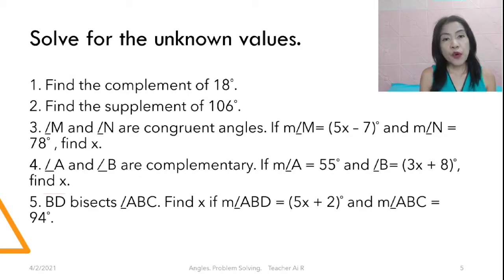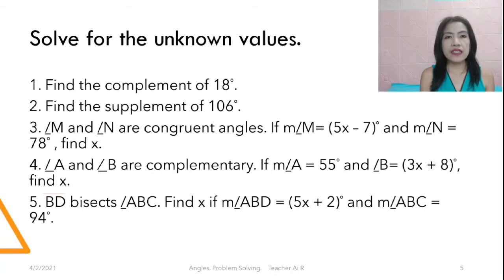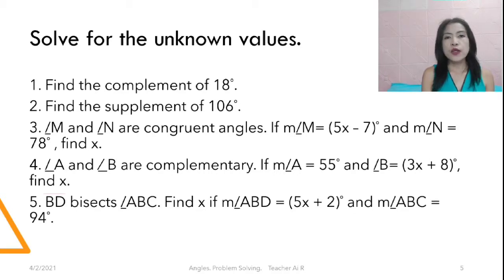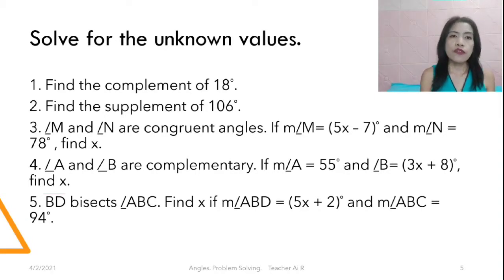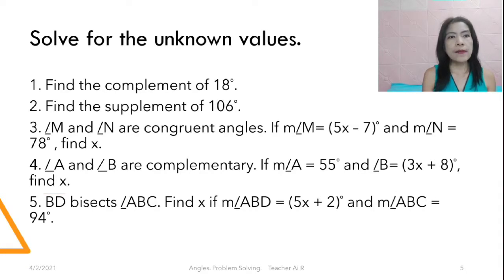And for number four: angle A and angle B are complementary angles. If the measure of angle A is 55 degrees and the measure of angle B is 3X plus 8 degrees, find X. And then for number five: line BD bisects angle ABC. Find X if the measure of angle ABD is equal to 5X plus 2 degrees and the measure of angle ABC is 94 degrees.